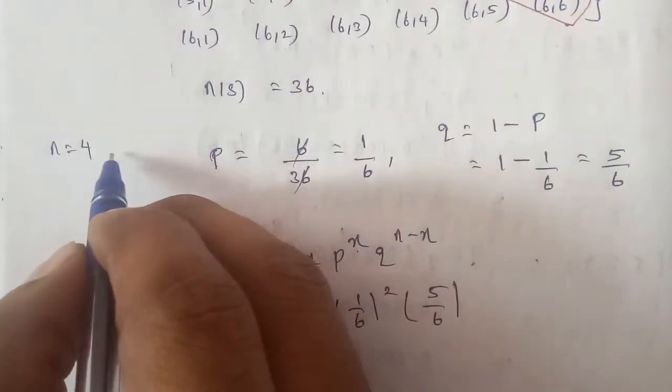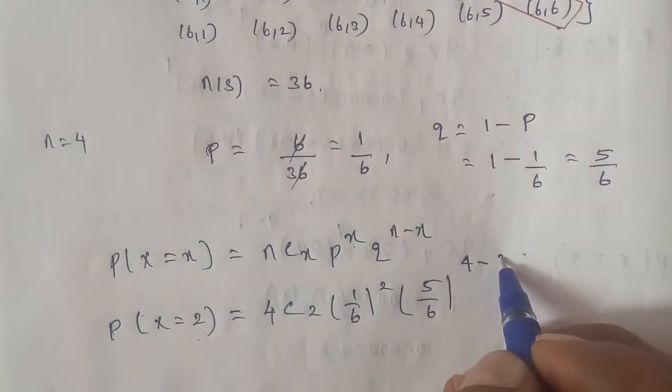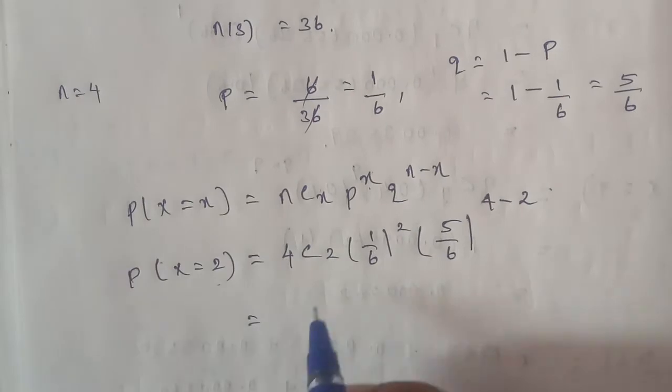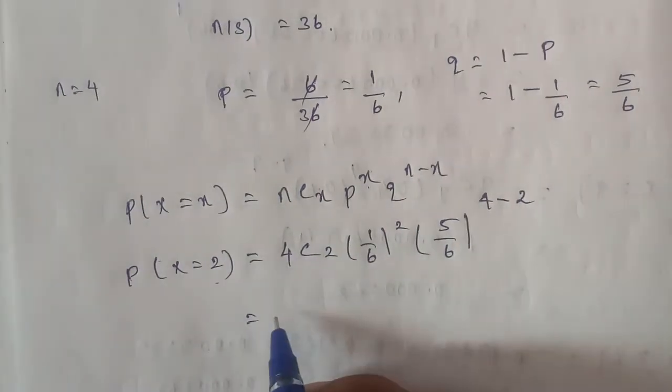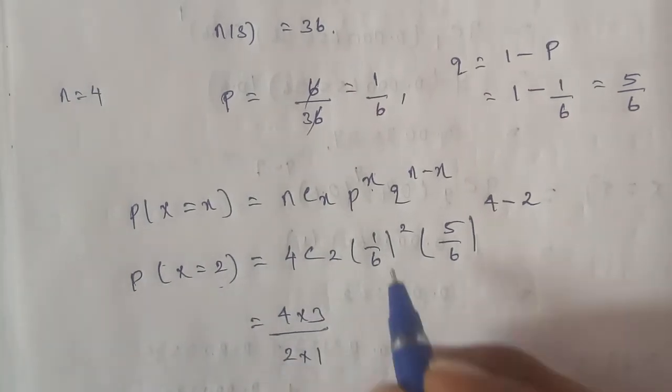Formula n minus x, number of times is 4, x value is 2. Therefore this is 4C2. The 4 combination of 2, taking two numbers, is 4 into 3 divided by 2 into 1.